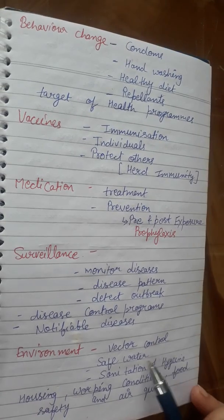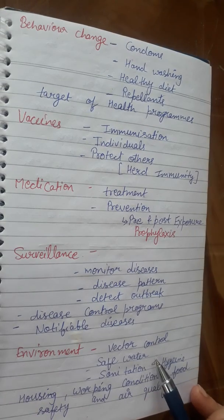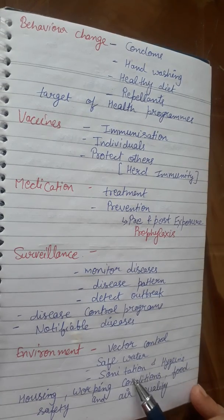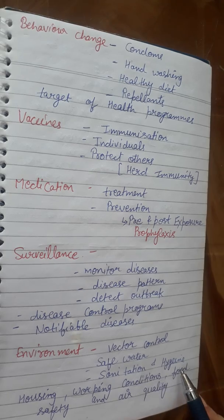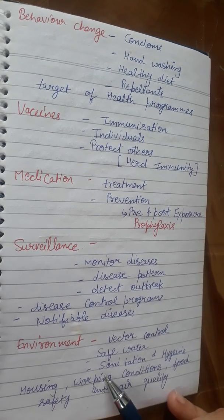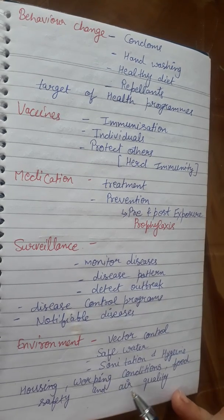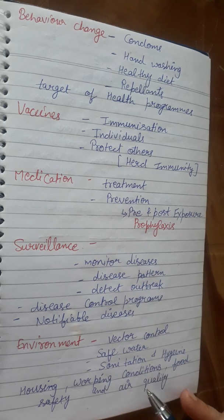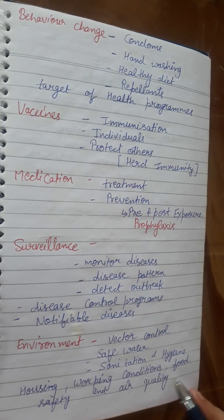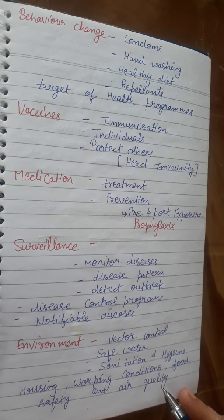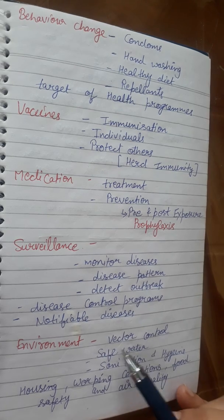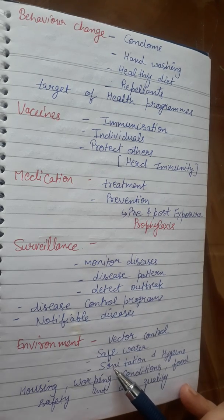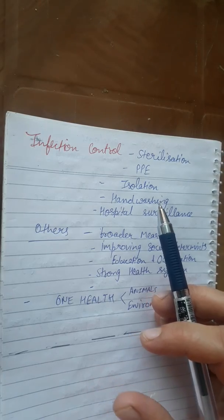Environmental measures can also be used, like vector control, using safe water to drink, sanitation and hygiene, housing, and working conditions — how a person's environment can reduce social stress — as well as food safety and air quality. These are all important to control infections.